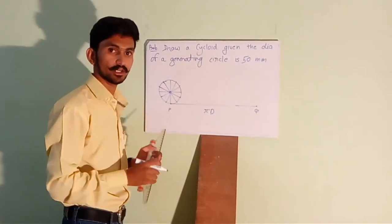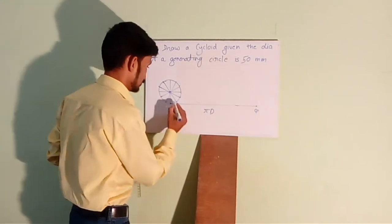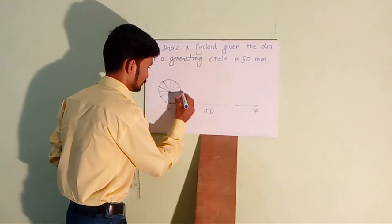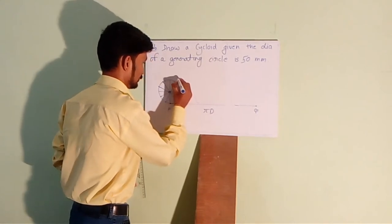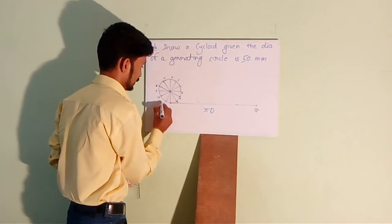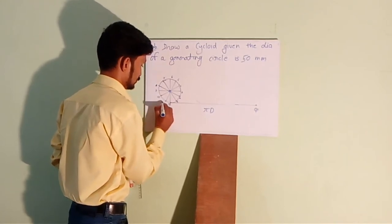You have to draw it very accurately using the right equipment. Mark these points and name this point as 1, 2, 3, 4, 5, 6, 7, 8, 9, 10, 11 and 12.